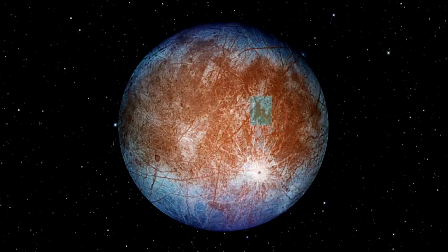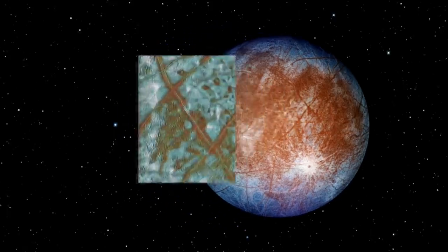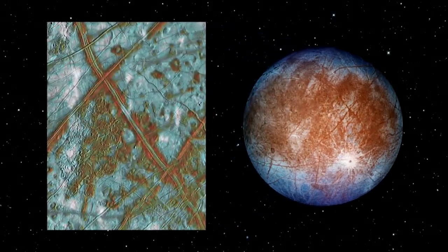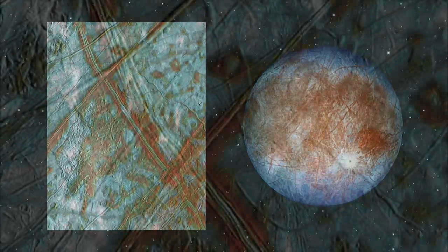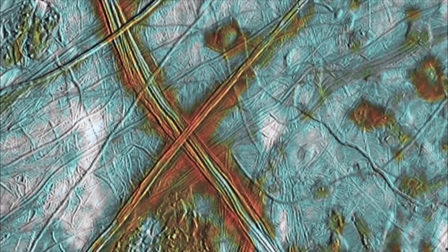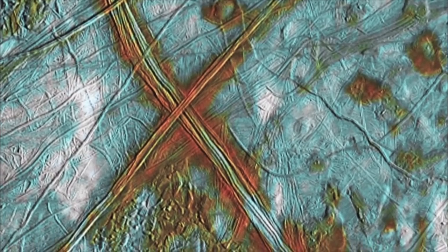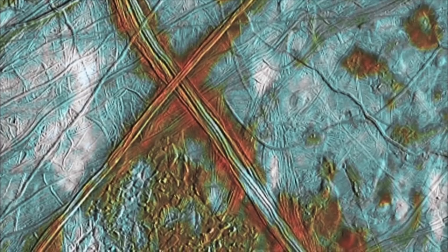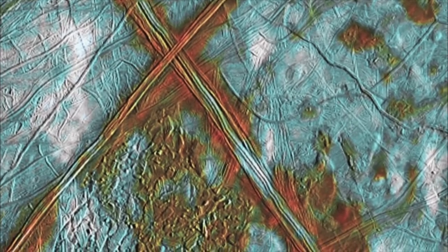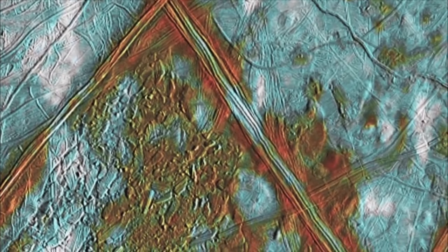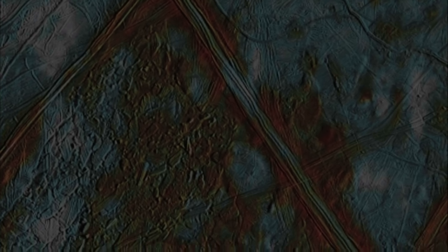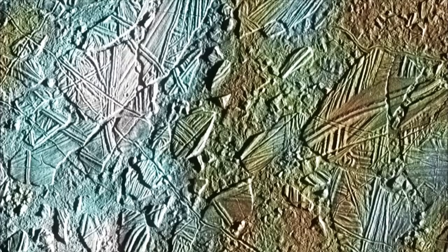Europa is crisscrossed with a network of cracks that suggest its icy crust has opened up from time to time, letting a watery slush spill out onto the surface. In one area scientists have found what appear to be icebergs that cracked and floated apart like rafts before the surface refroze.